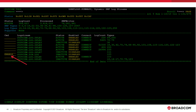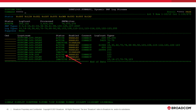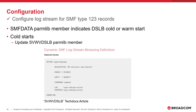By default, once the log stream is defined to DSLB, it is put into an inactive state and must be enabled in order for DSLB to actively log record types to the log stream. We can see the status field for whether the log stream is active or inactive. The SMF data parm lab member indicates if DSLB should use cold or warm starts. If warm starts are indicated, the add and log subcommands on the DSMF logs display can be used and your definitions will persist through warm starts. If cold starts are indicated, you must update the SVW vDSLB parm lab member to persist your DSLB definitions. An example definition is seen on the screen.